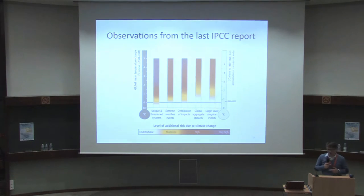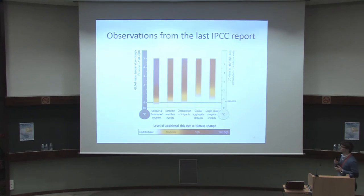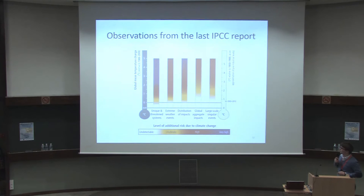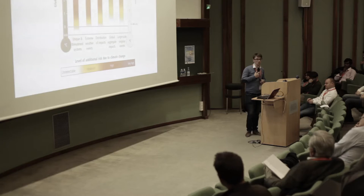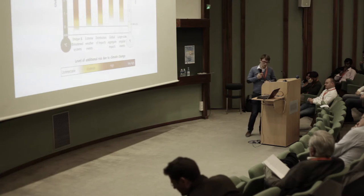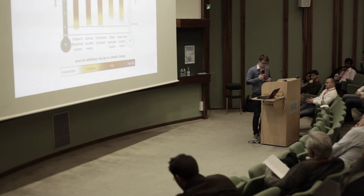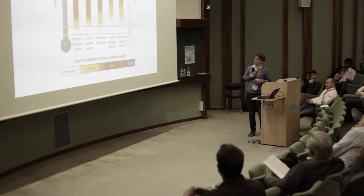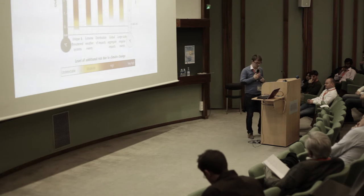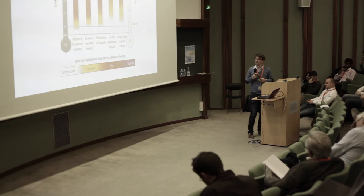Next, about the global aggregate impact — it is not the easiest Reason for Concern to explain. But the IPCC report tells us that between one and two degrees, risks are moderate and there will not be significant changes in gross domestic product or biodiversity. Around three degrees, the risk can become high with high confidence.